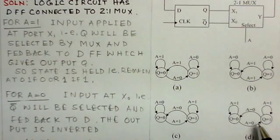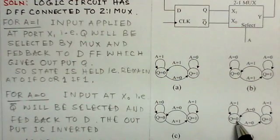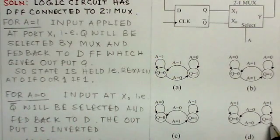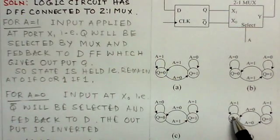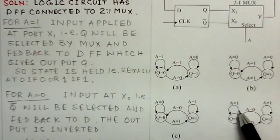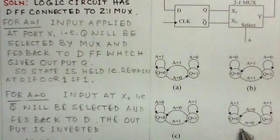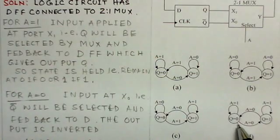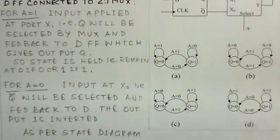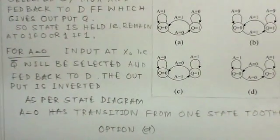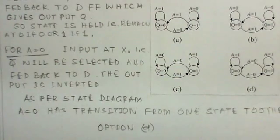For A equals 1, the circuit will remain at Q equals 0 — the state will not change, it comes back to the same state. Similarly, if Q is 1, it will remain Q equals 1 for A equals 1. But for A equals 0, the state is changing — going from Q equals 1 to Q equals 0, and if Q equals 0, it goes to Q equals 1.